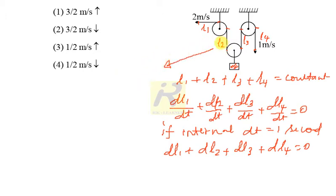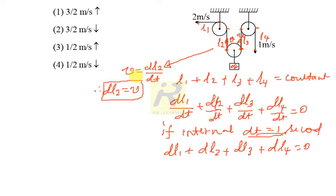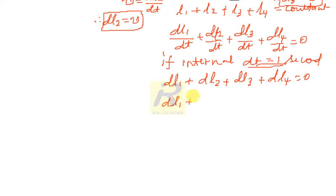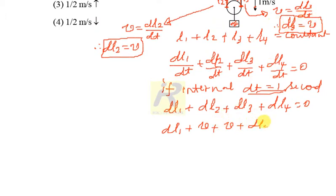The velocity of the rope at the pulley point is upward with velocity v, and here also the velocity is v — these two points must move up with the same speed. So v equals dL2/dt, and since dt is one second, dL2 equals v. Similarly, v equals dL3/dt, therefore dL3 equals v. Substituting back: dL1 plus v plus v plus dL4 equals zero, which gives dL1 plus 2v plus dL4 equals zero.